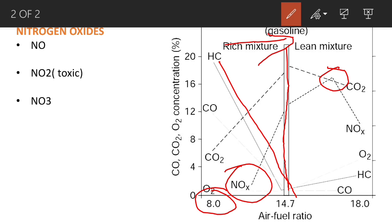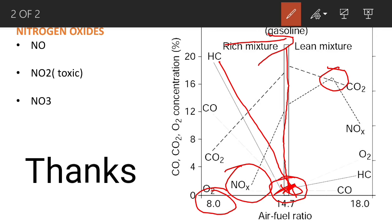Hydrocarbons are at their minimum quantity in the exhaust at the stoichiometric point. We have noticed that the conditions to minimize nitrogen oxides increase hydrocarbon emissions, and the conditions to reduce hydrocarbons increase nitrogen oxides. This inverse relationship is later controlled by the catalytic converter, which will be discussed in upcoming videos. Thank you.